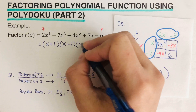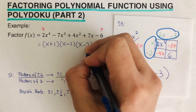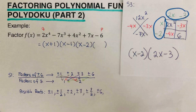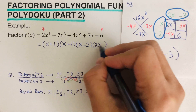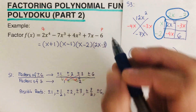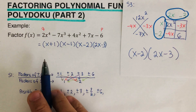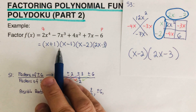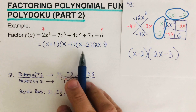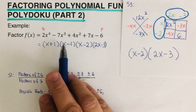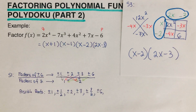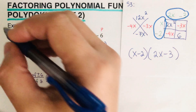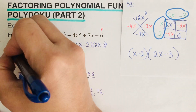These are the remaining factors: x minus 2 and 2x minus 3. So I can fill those in for the rest of the parentheses — that's x minus 2 and 2x minus 3. When we multiply all of these together using the area model, it comes out to the original form. So this is our factored form.